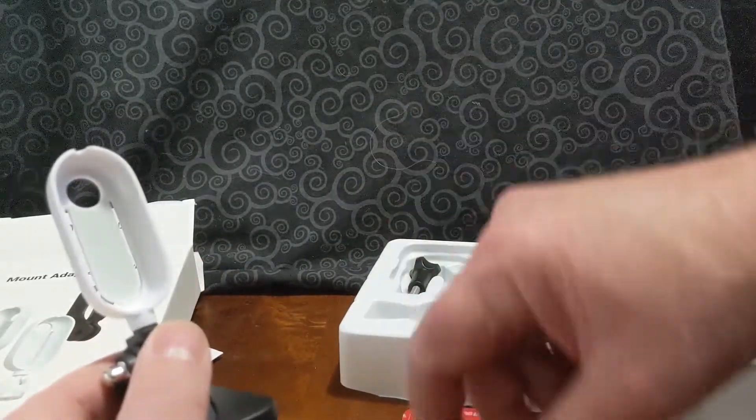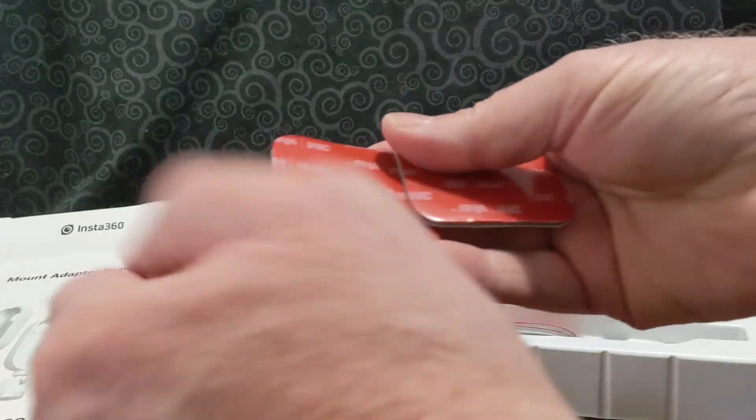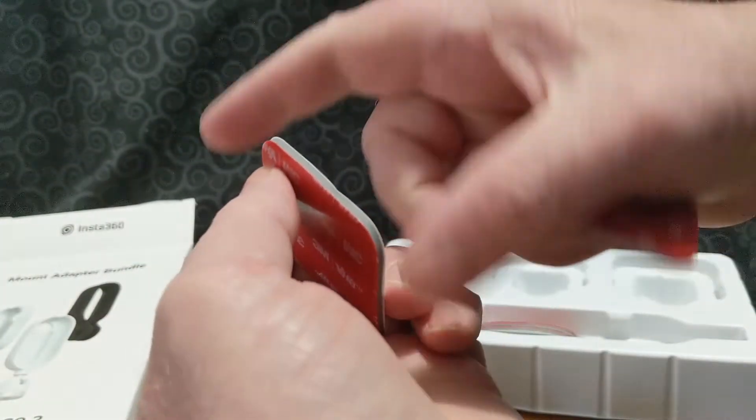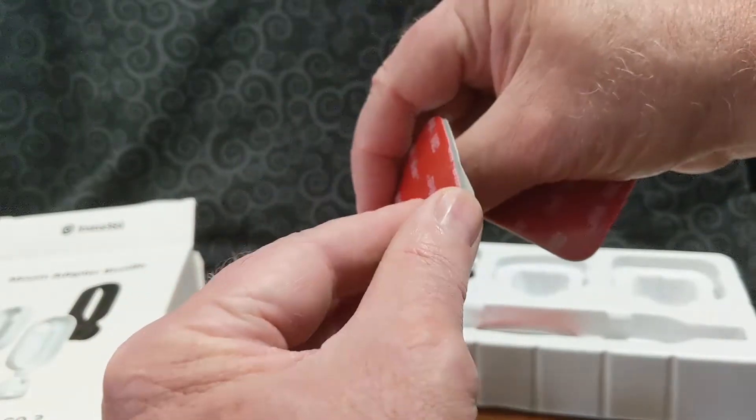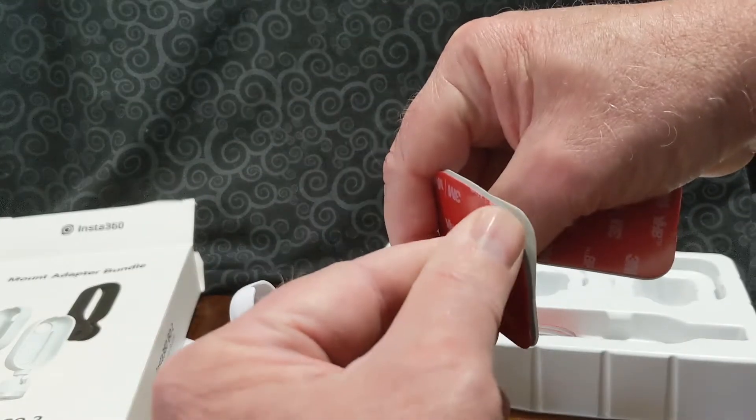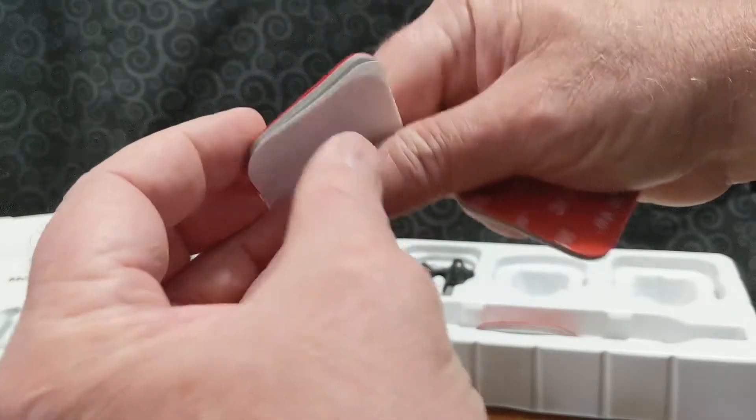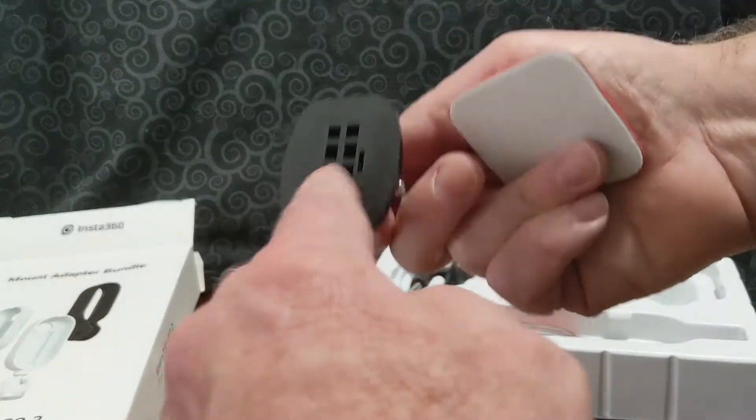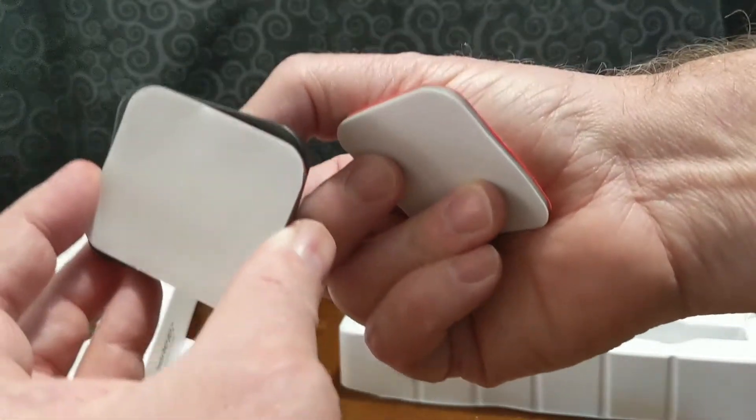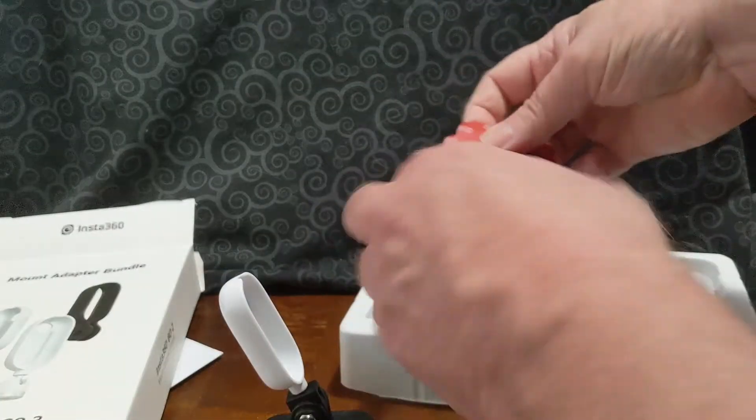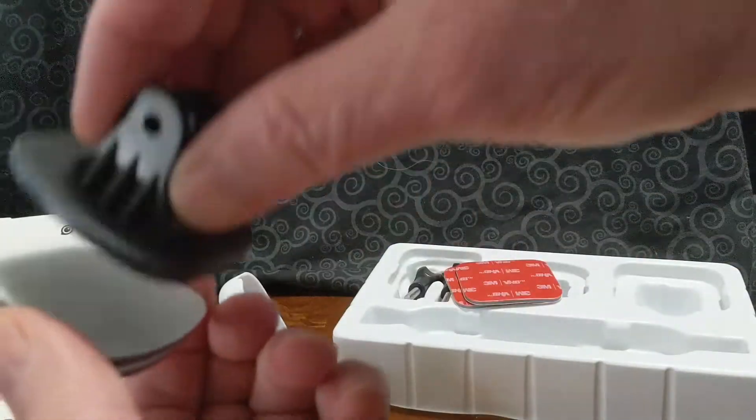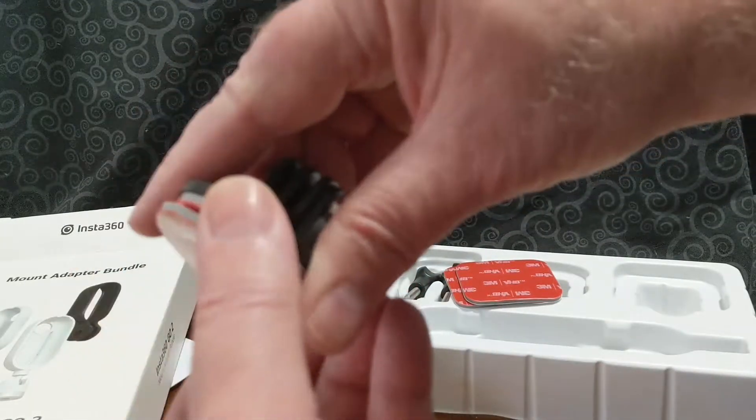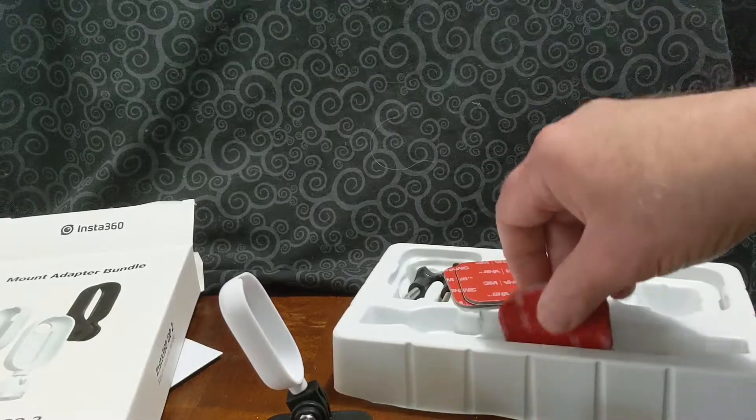Then it has a bunch of 3M tape. And this is so you could like permanently stick something somewhere. I don't know how permanent they are. I have to play with them. But it looks like stick them for the bottom of these things, or at least for this one. I'll have to check that out and figure that out. And then it has these two stickers for this. So actually, it's a pretty nice little kit.